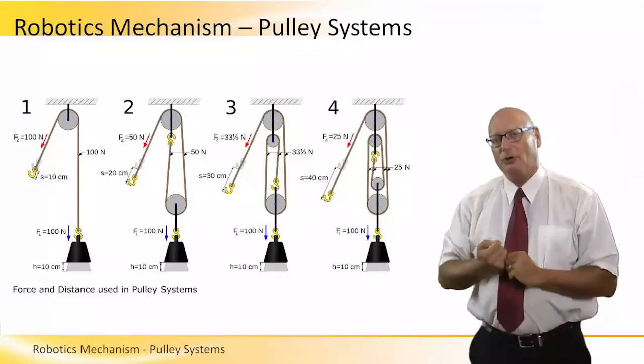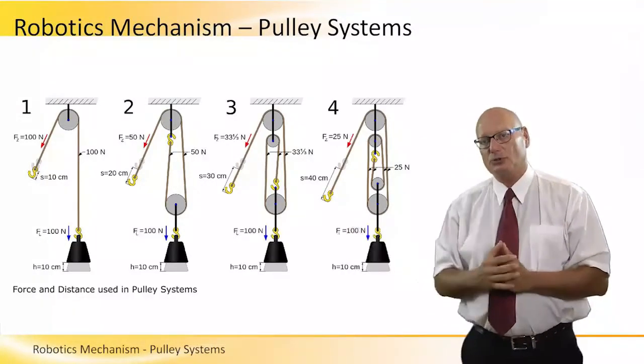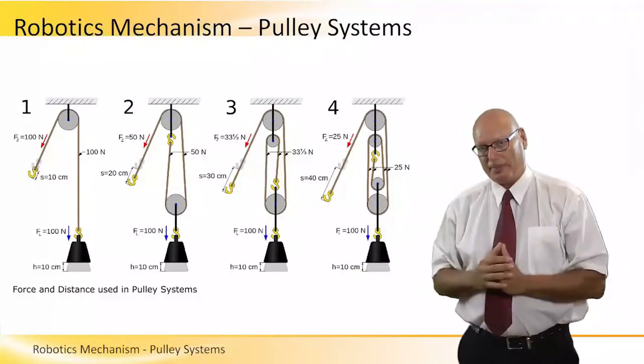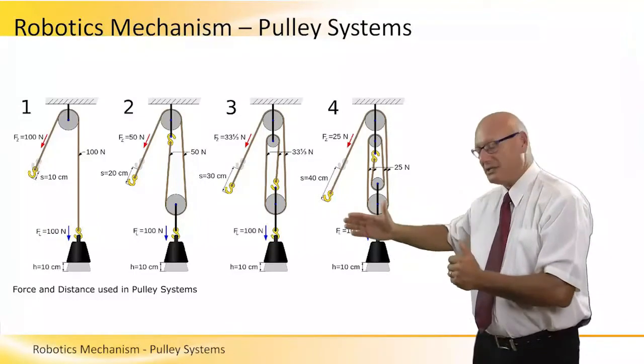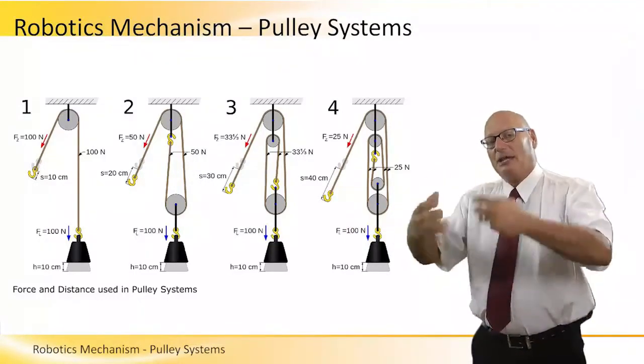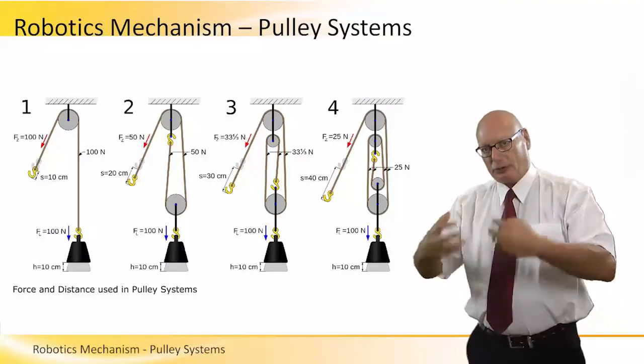The robot has to move three times longer than in the first configuration. So there is a trade-off between the force that the robot applies and the distance that the robot should go from point to point. But the upper we go with the pulley system degrees, the less energy the robot consumes.